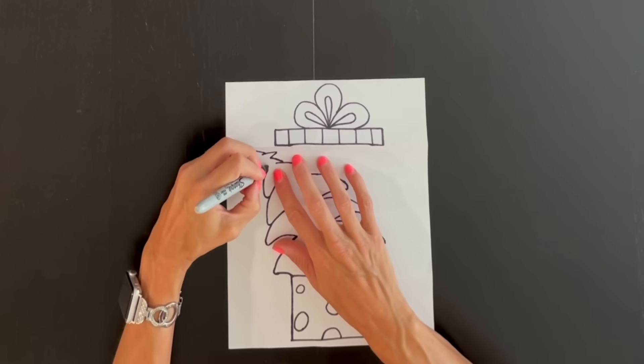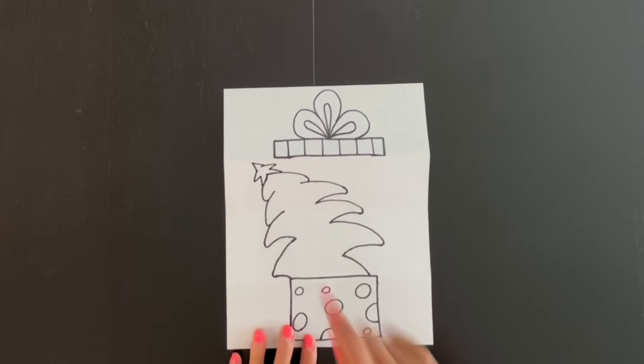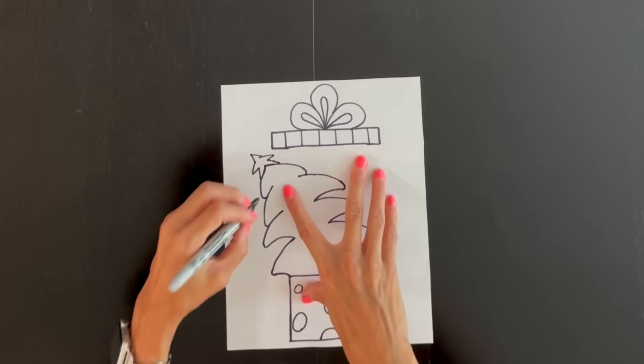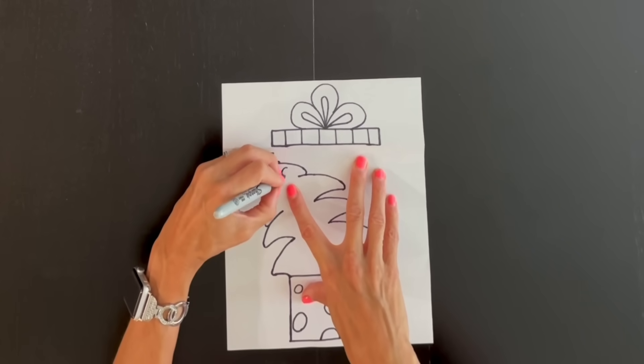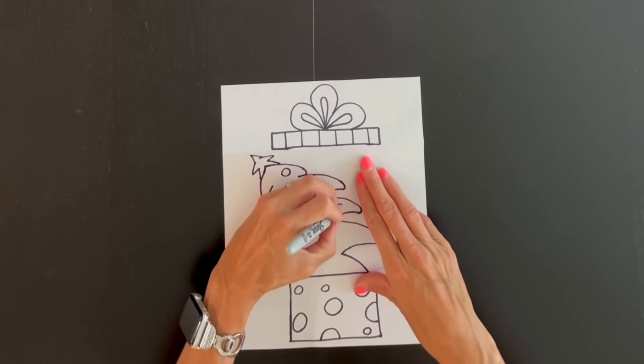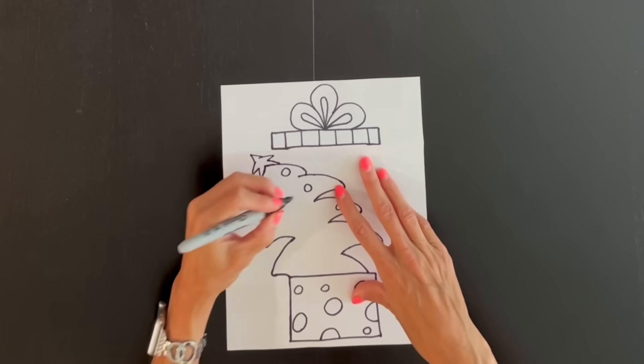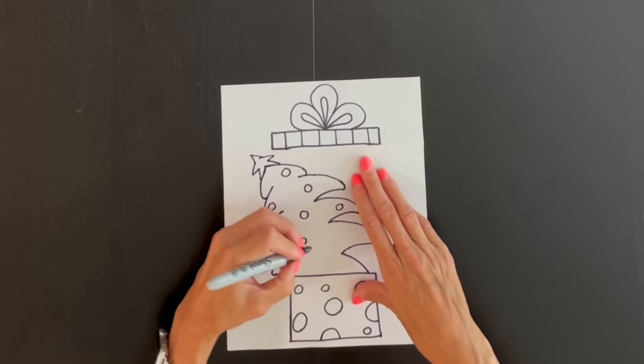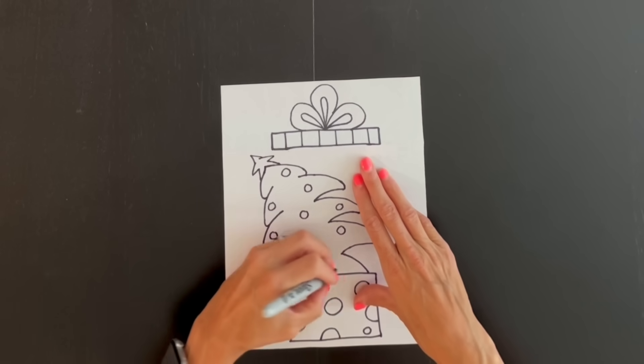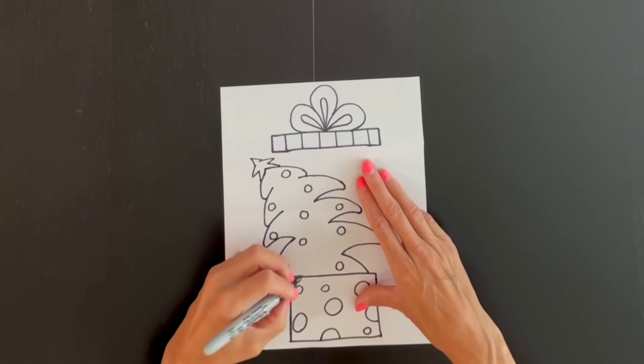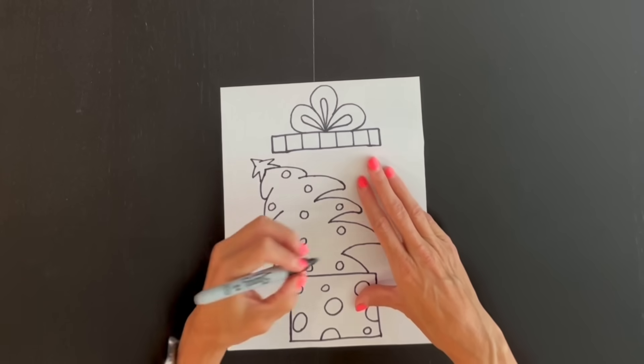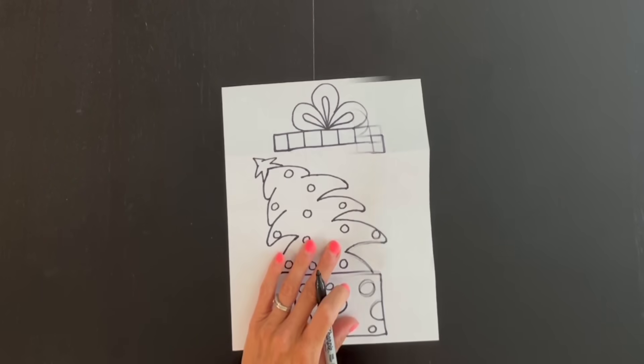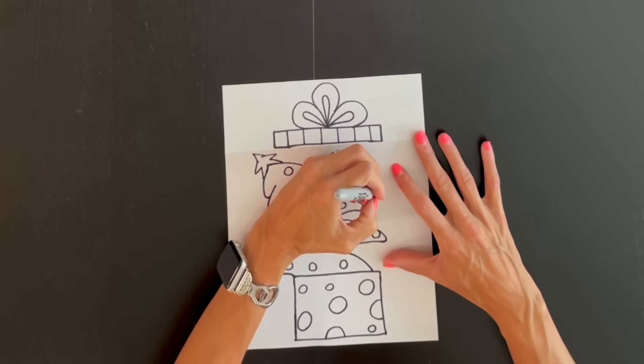And then right here at the bottom, I'm going to connect these two together to a point. So that kind of makes a star on top of my tree. Now on the tree, we're going to add some circles that are going to be ornaments. You can have as many or as few as you want.